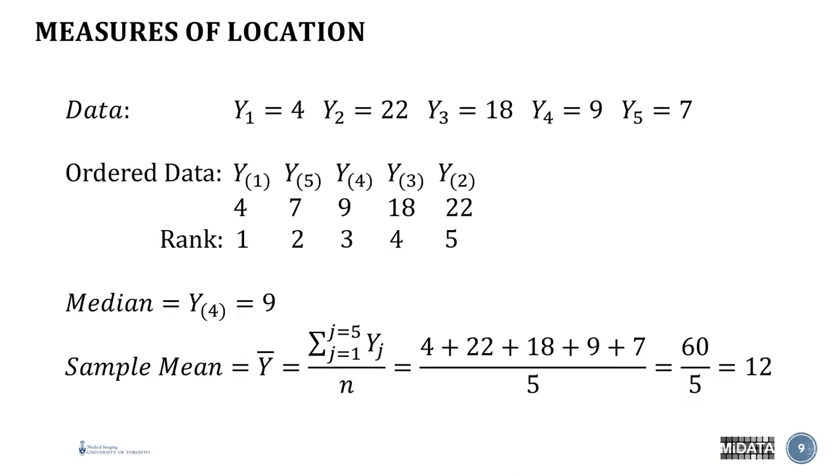Let's start with a common summary statistic, the measure of location. In general, the measure of location is used in order to identify the center of your distribution. For example, if we use this small data set of five values, we could order these values in ascending order, assign them a rank, and then look for the center rank, the middle rank. In this case, because we have five values, the middle rank will be three. And assigned to this middle rank is the value nine, and therefore our median is nine.